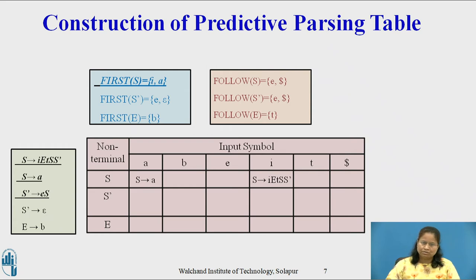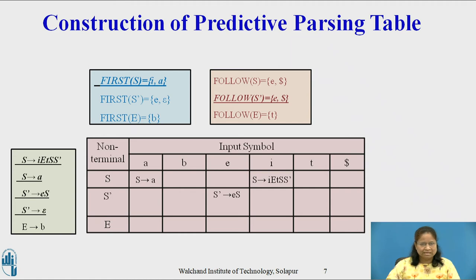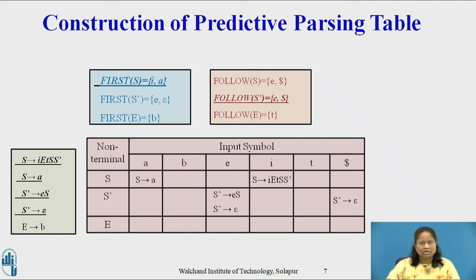Production capital S-dash derives small e, capital S causes M[capital S-dash, small e] to acquire capital S-dash derives small e, capital S. Production capital S-dash derives epsilon causes M[capital S-dash, small e] and M[capital S-dash, dollar] to acquire capital S-dash derives epsilon, since Follow of capital S-dash equals {small e, dollar}. Production capital E derives small b causes M[capital E, small b] to acquire capital E derives small b, as First of capital E equals {small b}.